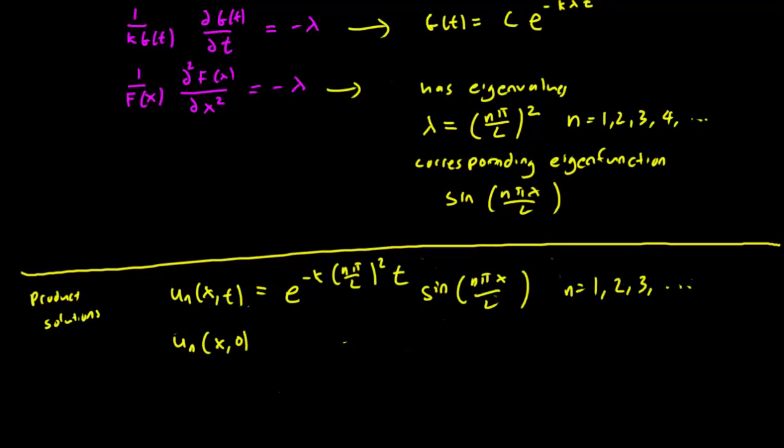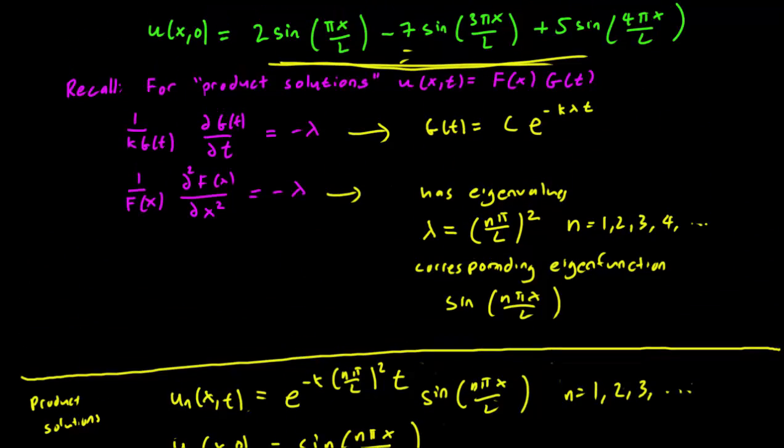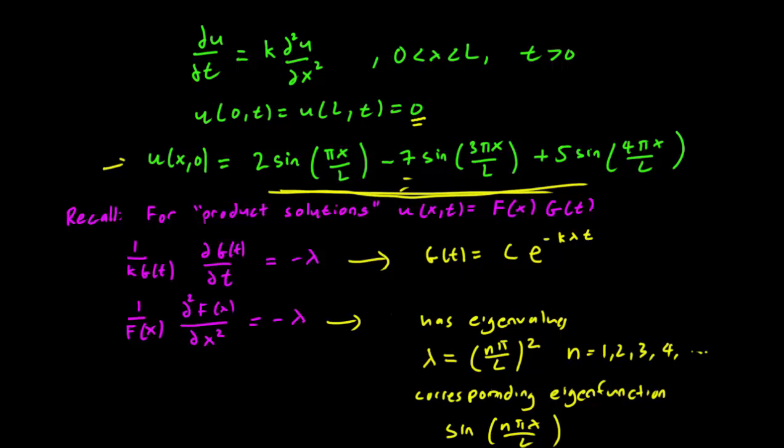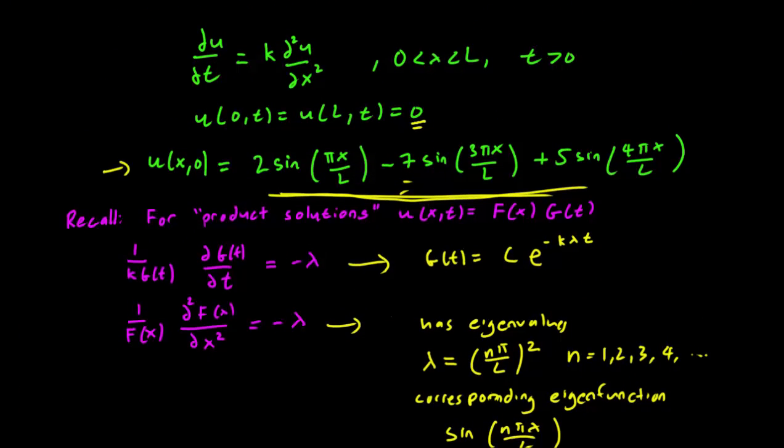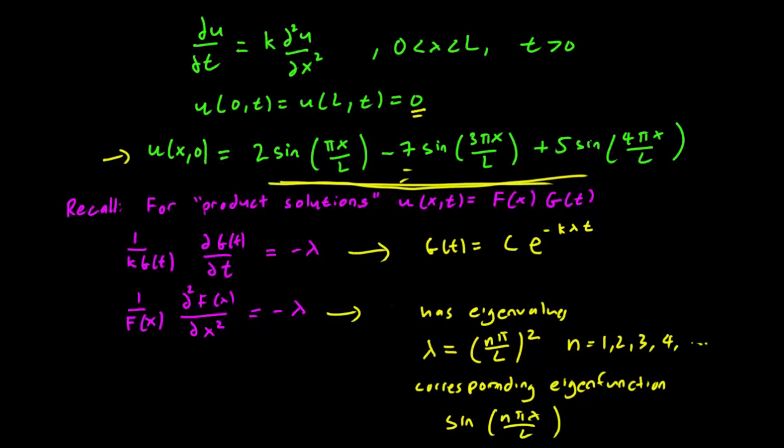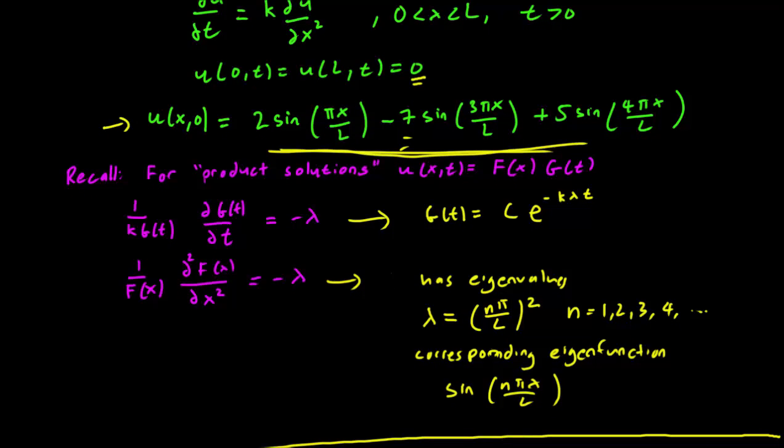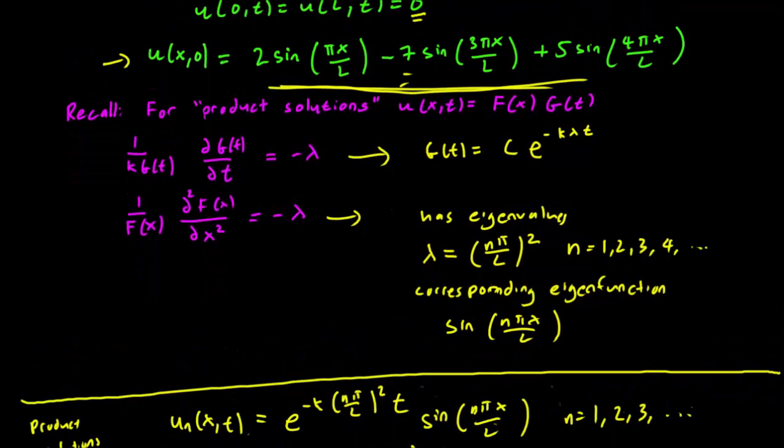u_n(x,0) equals, so the exponential term disappears. Setting t = 0 means that e^0 = 1, so that goes away and we are left with just sin(nπx/L). So it should be clear that we are not going to get the initial condition we want if we just use one product solution. But it seems that we can get that initial condition if we add three product solutions together. So let's give it a try.